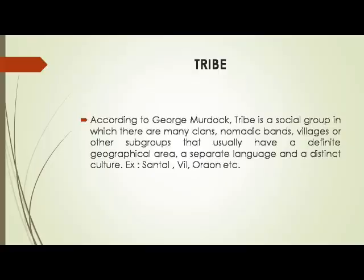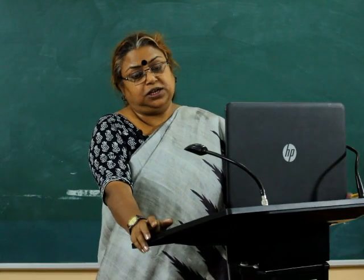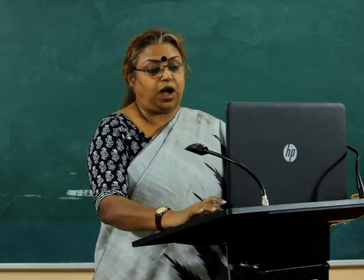According to George Murdock, a tribe is a social group in which there are many clans, nomadic bands, villages, or other subgroups that usually have a definite geographical area, a separate language, and a distinctive culture. Three important features are necessary for a tribe: definite geographical territory, a specific language, and a distinct culture — for example, Santhal, Bhil, and Oraon.